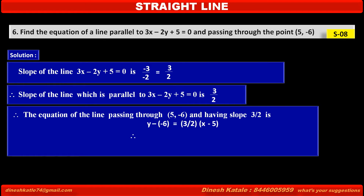Therefore, by cross-multiplication, we get 2(y + 6) = 3(x - 5), which gives 2y + 12 = 3x - 15.